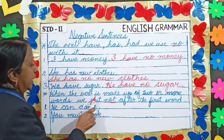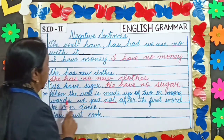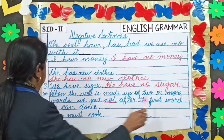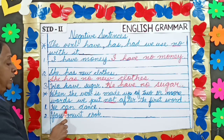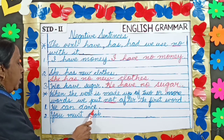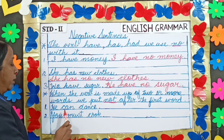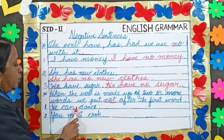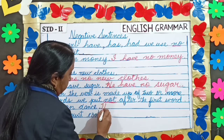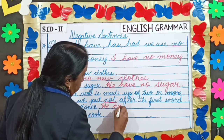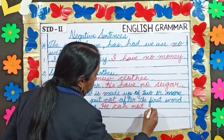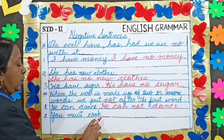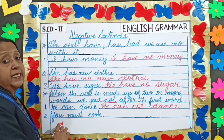When the verb is made up of two or more words, we put 'not' after the first word. Number one: 'He can dance.' Here we have two verbs — 'can' and 'dance.' So we will put 'not' after the first verb: 'He cannot dance.' Number two: 'You must cook.' Converted: 'You must not cook.'